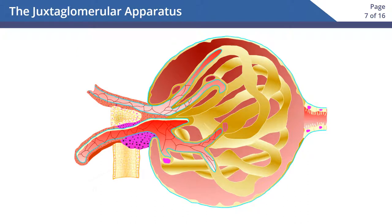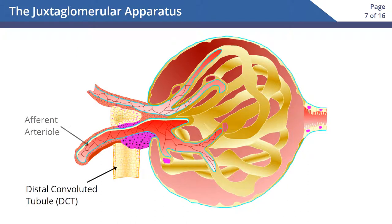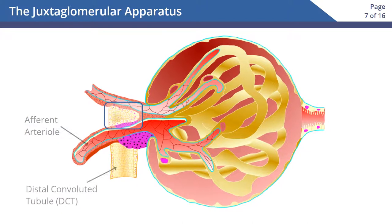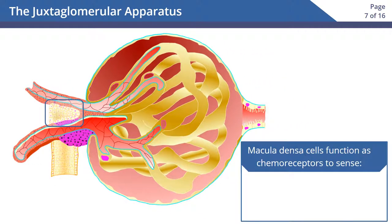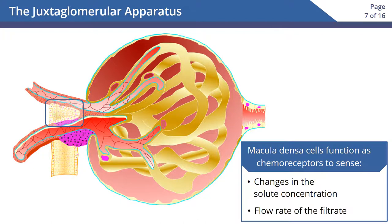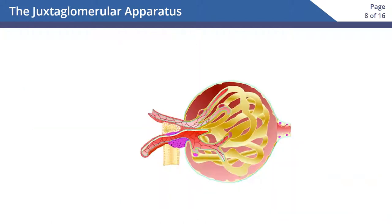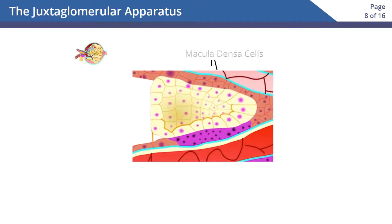The specialized cells of the DCT at the point of contact with the afferent arteriole are the macula densa cells. These cells function as chemoreceptors to sense changes in the solute concentration and flow rate of the filtrate. Here's a close-up of the macula densa cells.